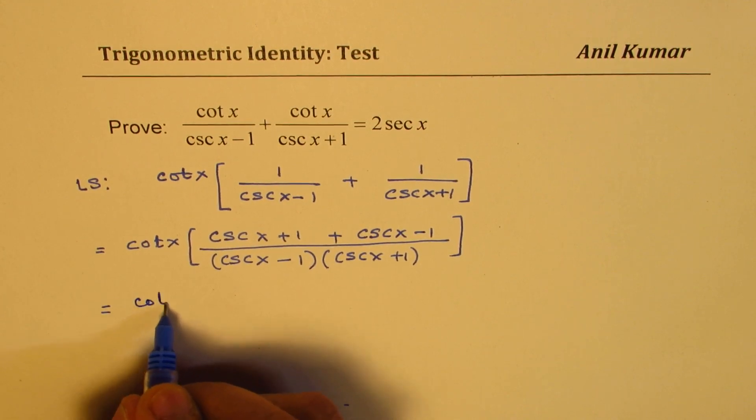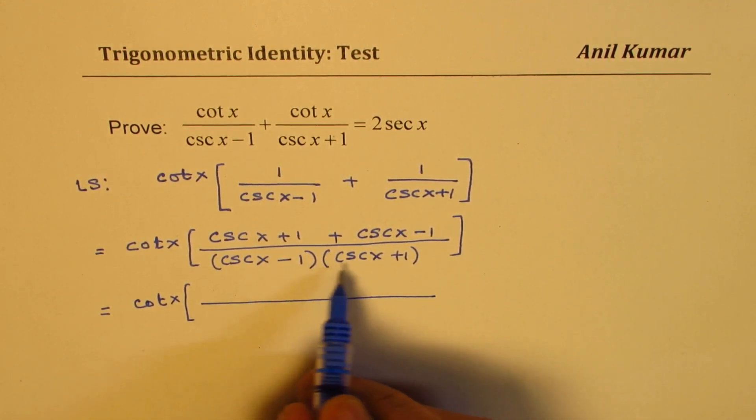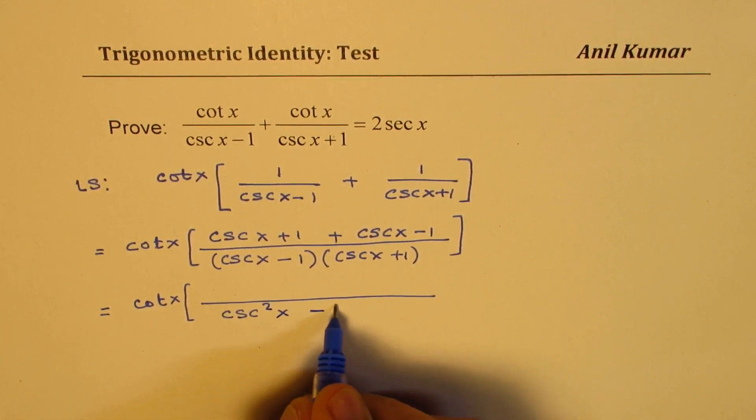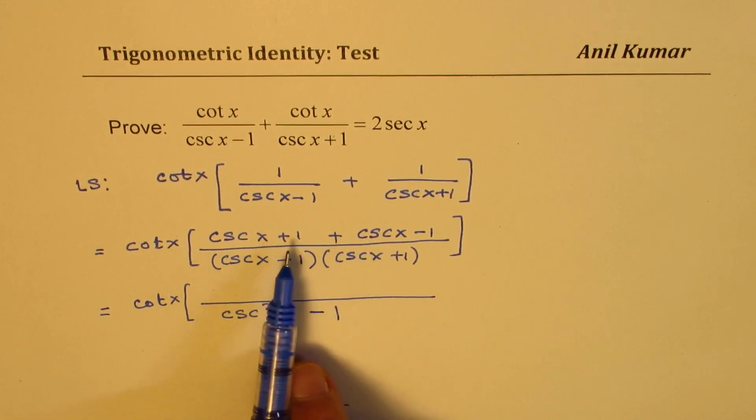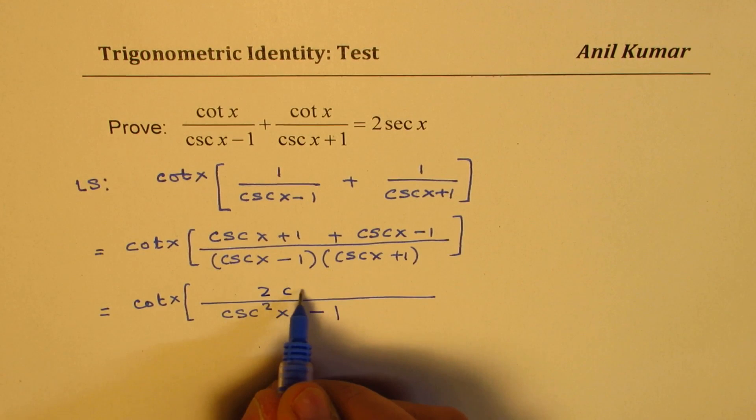So we have cot x. The denominator becomes difference of squares. So we have cosecant square x minus 1. In the numerator, plus and minus 1 cancel, and you get 2 cosecant x.